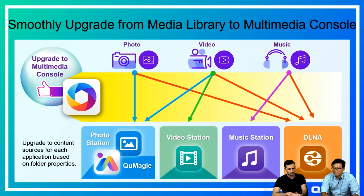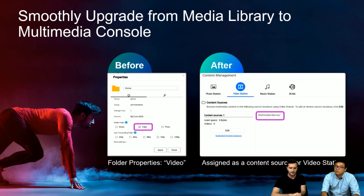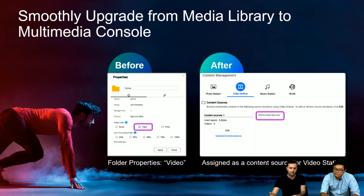Even if you already set properties in a previous QTS version, we can still upgrade most settings to multimedia console. For example: before upgrading, if a folder property is set to 'video,' it's a video folder — after upgrading it will be assigned as a Video Station content source. It's easy to understand and the arrangement will be done much faster because of QMAG.